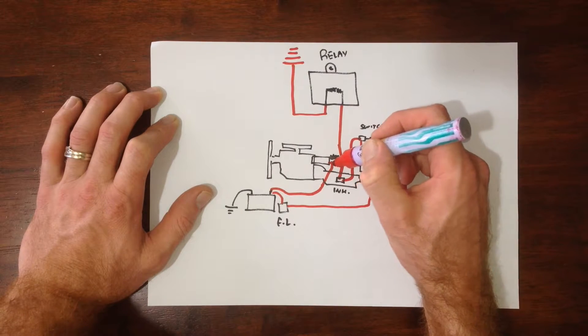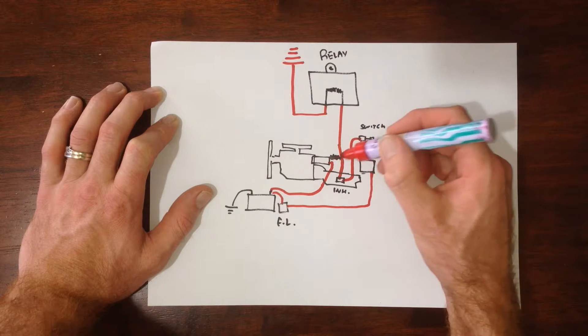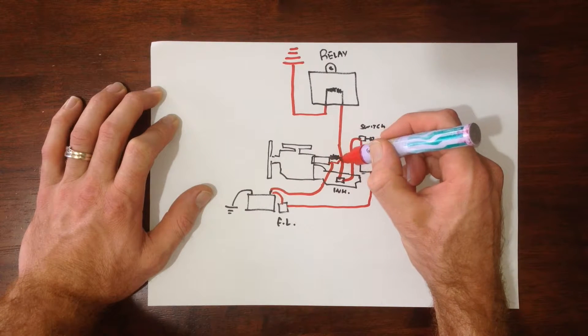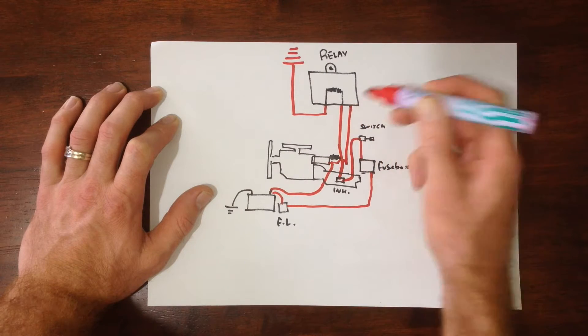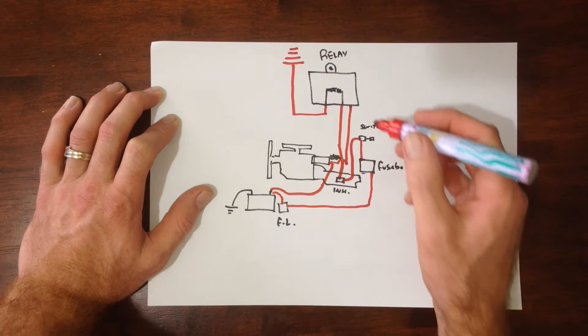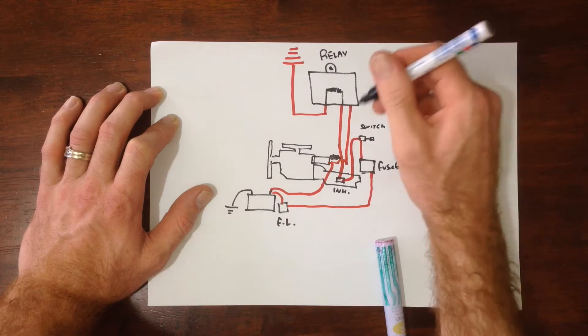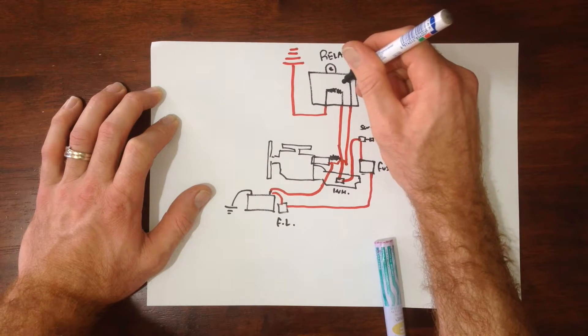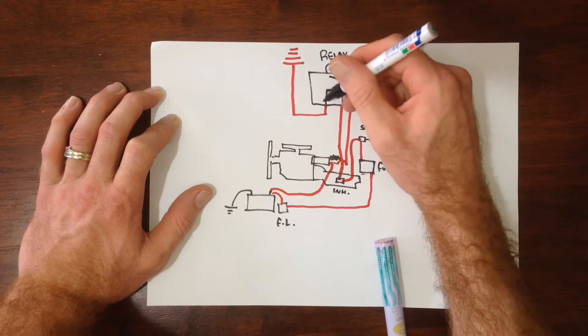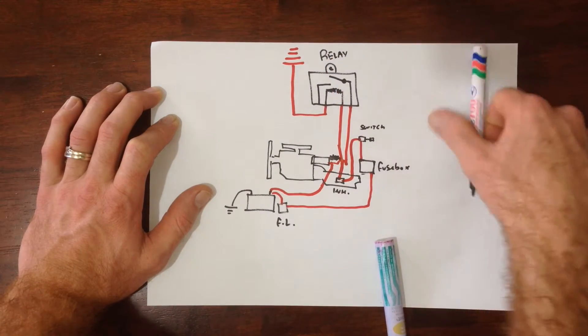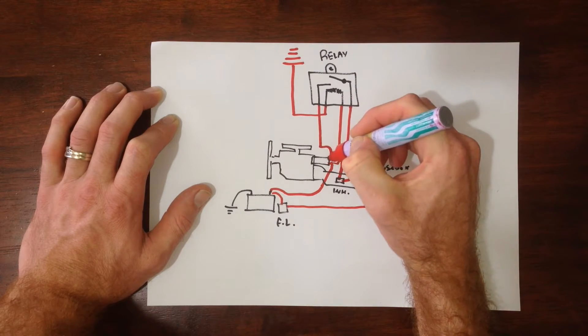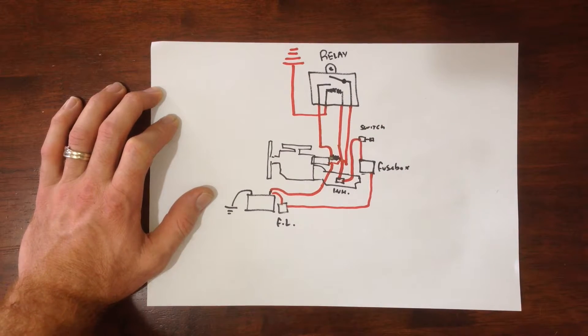And we feed it with a nice big cable to here. And it goes through our points. And then back again to the solenoid.